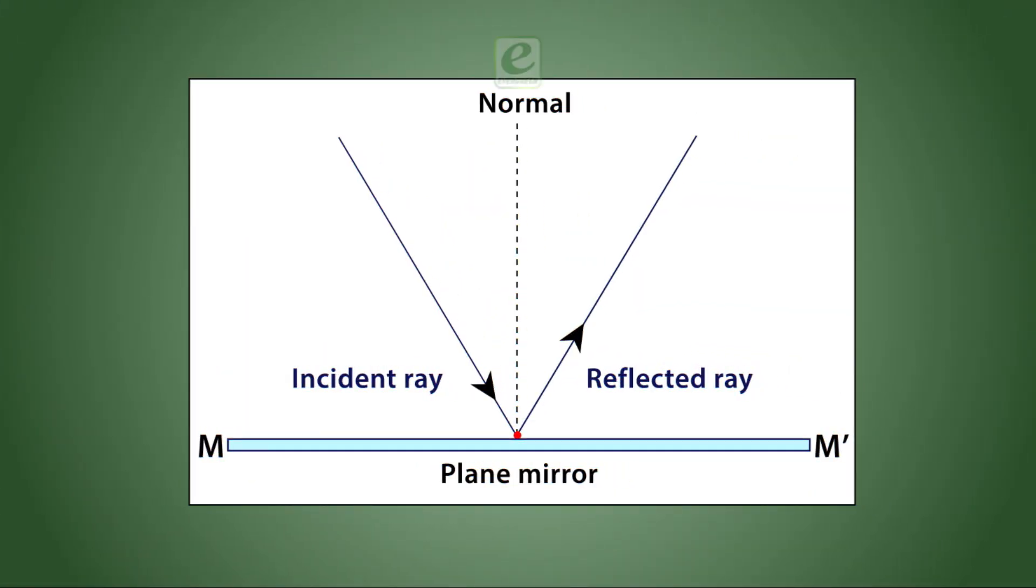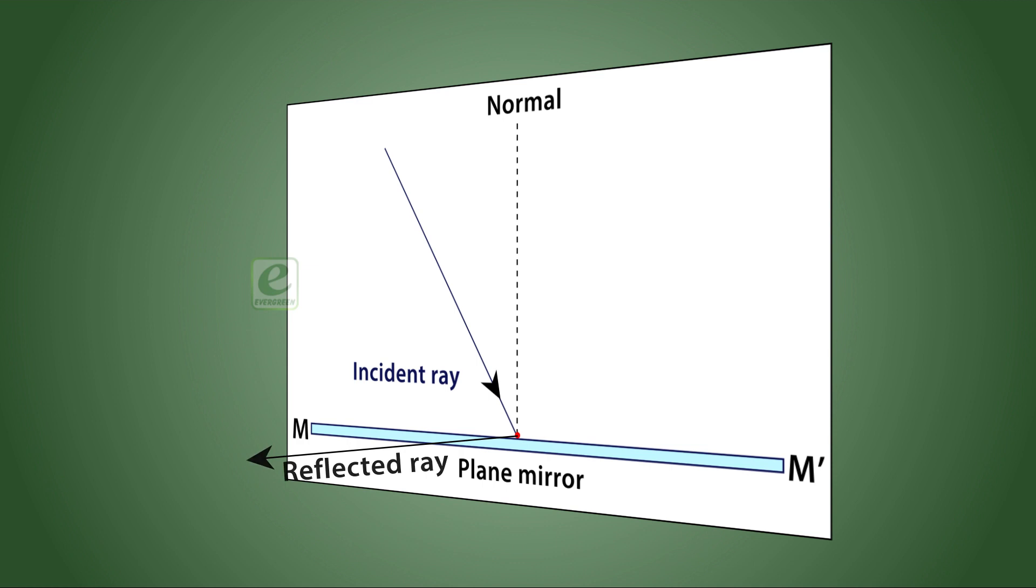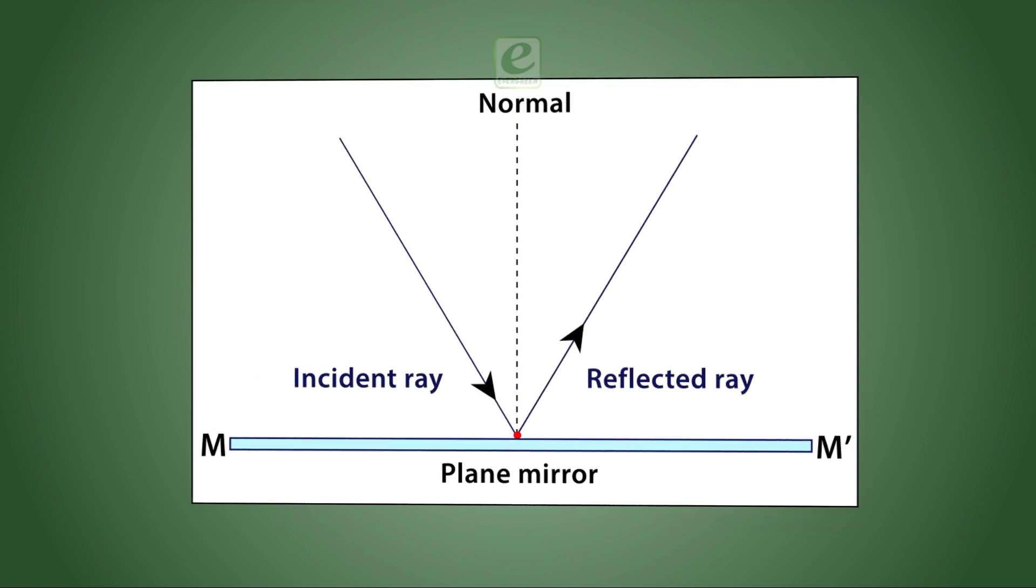The second law of reflection states that the incident ray, the reflected ray, and the normal at the point of incidence all lie in the same plane. For example, the diagram will change if the reflected ray is in this direction. Here, the incident ray and the normal lie in the same plane, but the reflected ray is not in that plane, violating the second law. Hence, it will never be reflected in this direction. It has to be like so.